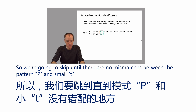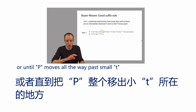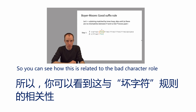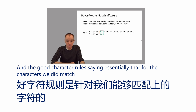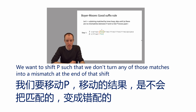We're going to skip until there are no mismatches between the pattern P and small t, or until P moves all the way past small t. You can see how this is related to the bad character rule: the bad character rule said upon mismatch we want to shift P such that the mismatch becomes a match, and the good suffix rule says that for the characters we did match, we want to shift P such that we don't turn any of those matches into a mismatch.